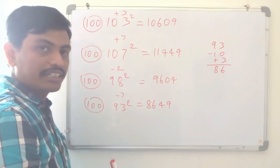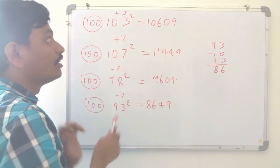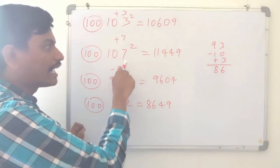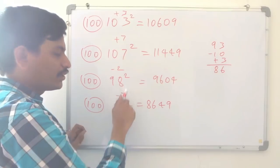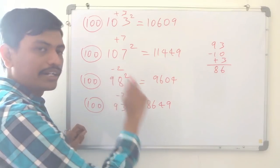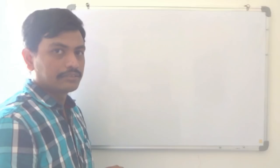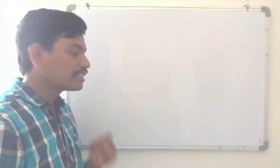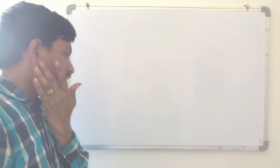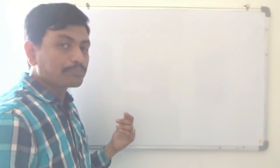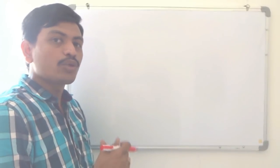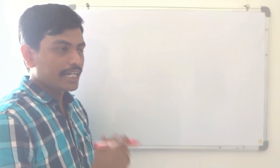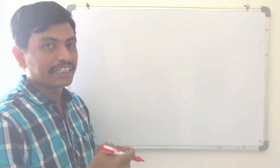Like this, we can find squares from 100 to 110 and also from 90 to 100. Now we shall see squares from 110 to 120 and 80 to 90.